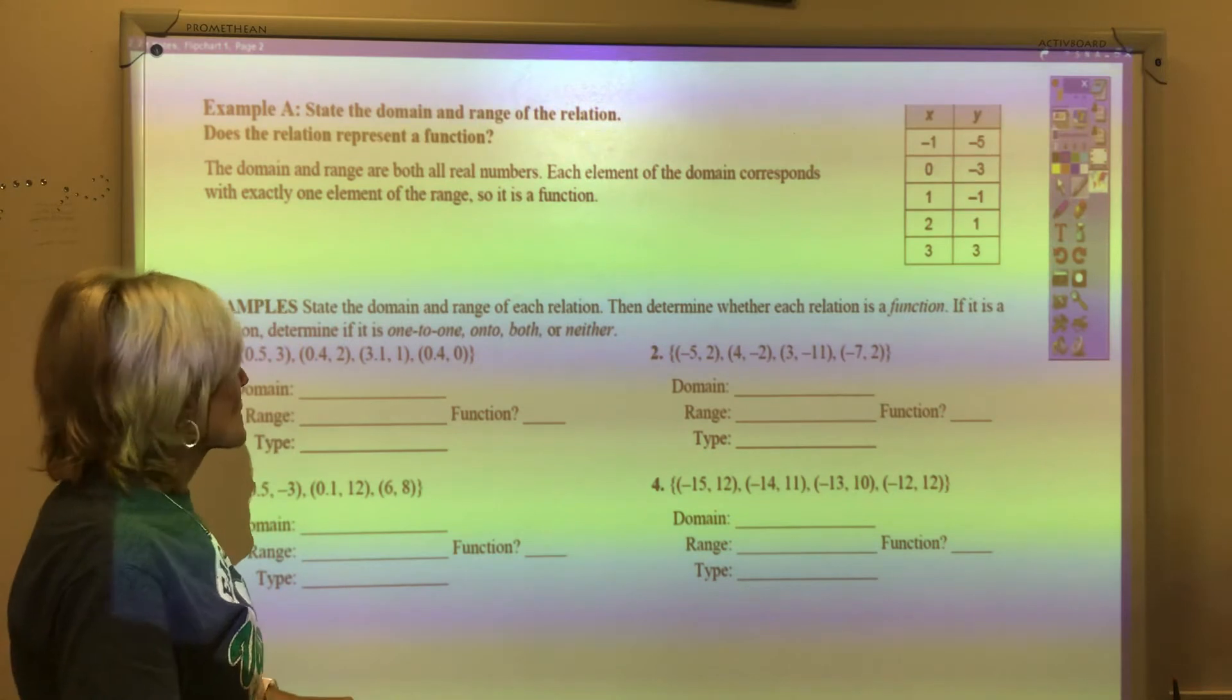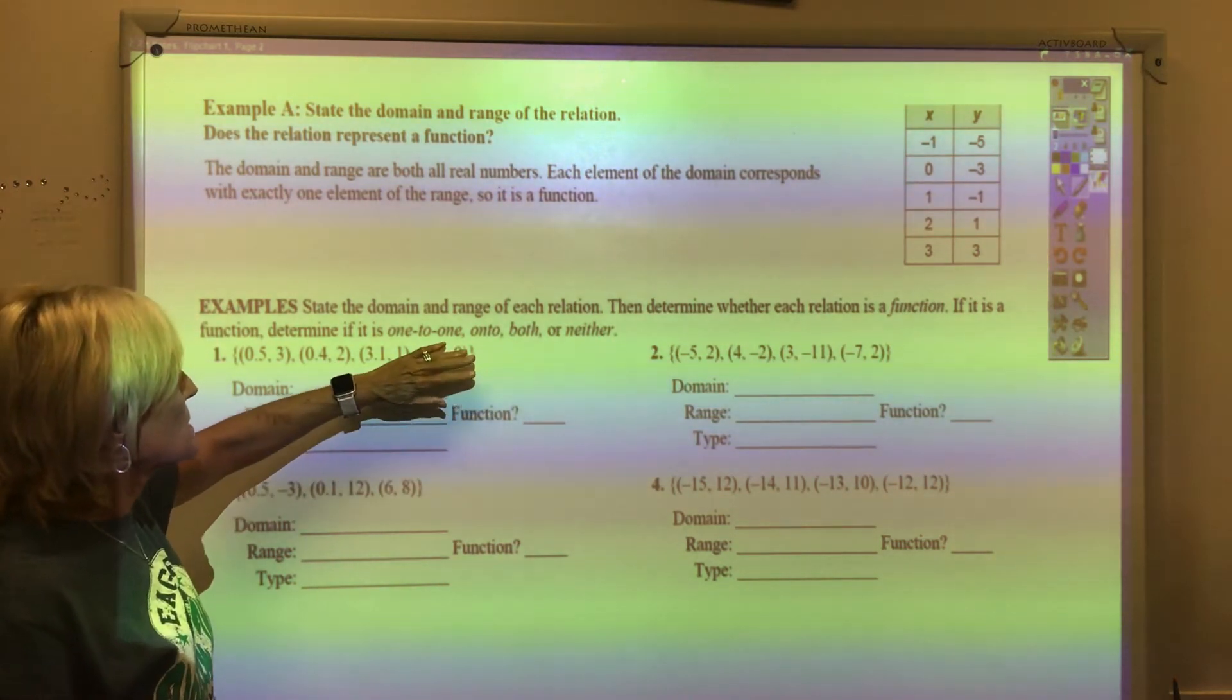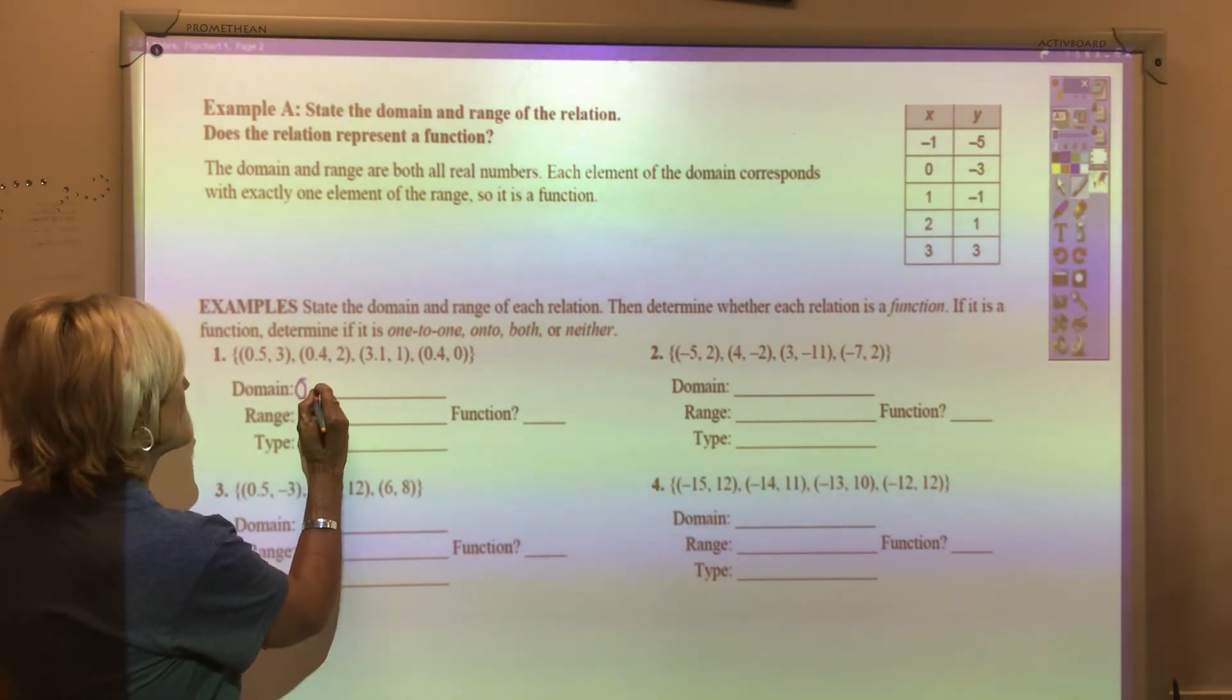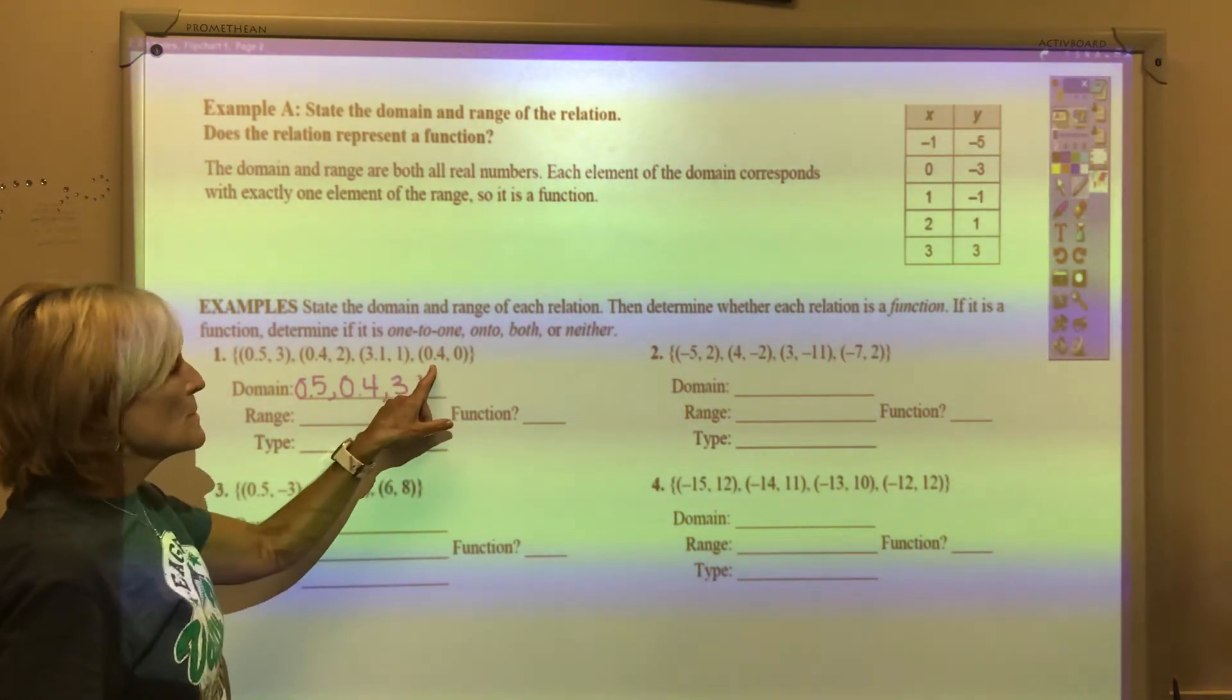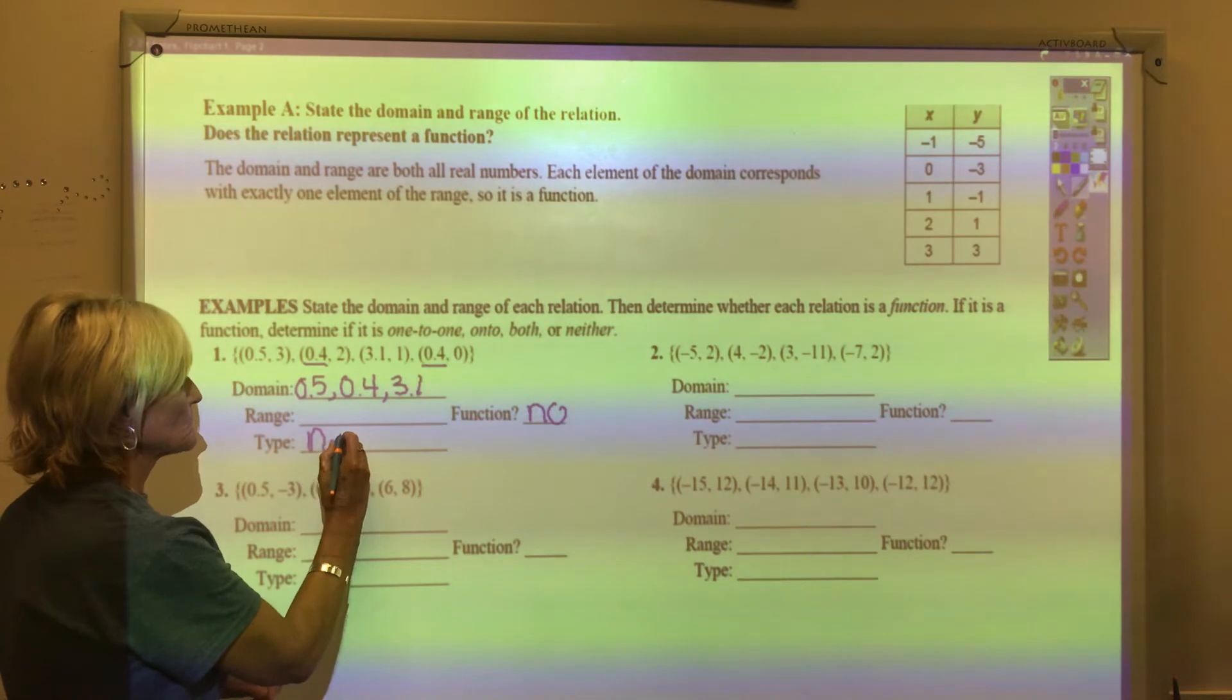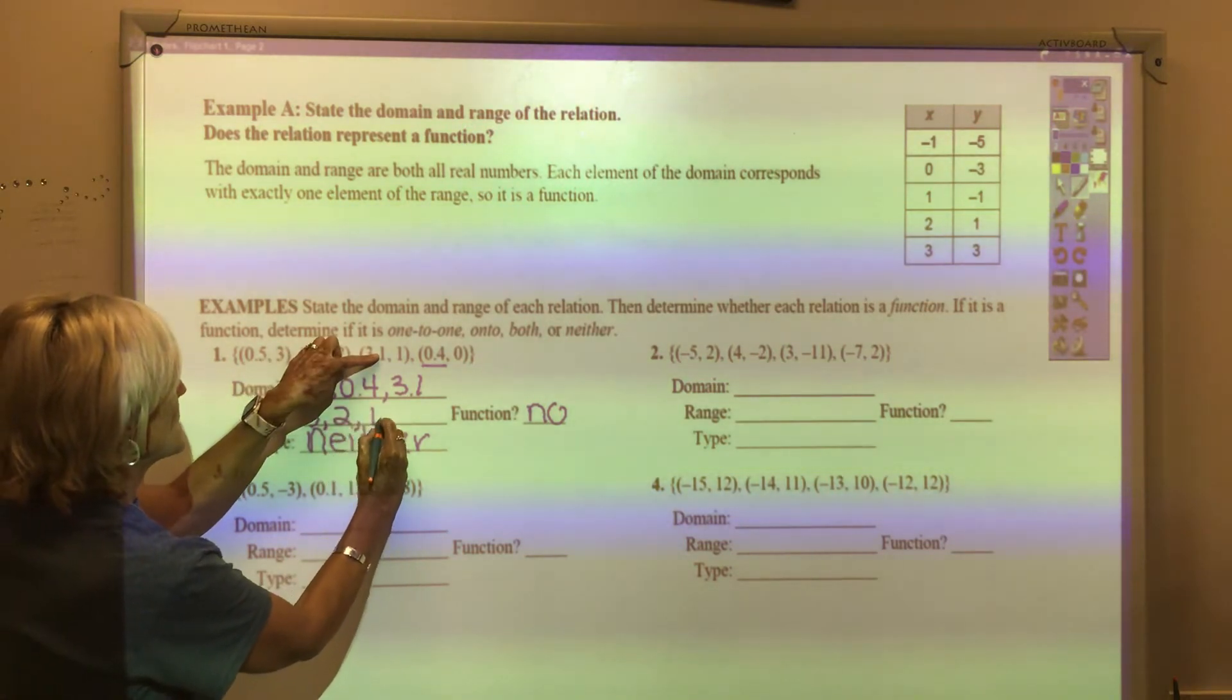We're going to practice determining whether a relation is a function and also find the domain and range. If the relation is a function, we're going to determine whether it's a one to one, it's onto, it's both, or it's neither. First of all, our domain are our x's. So 0.5, 0.4, 3.1, and I don't need to repeat the 0.4. This, because the x is repeated, this will not be a function. So the type would be neither. The range of this function is 3, 2, 1, and 0.